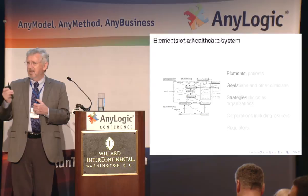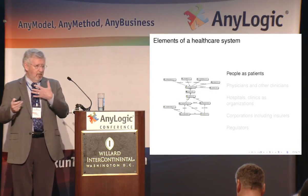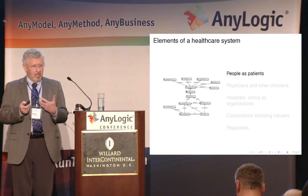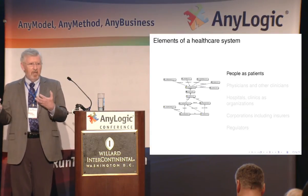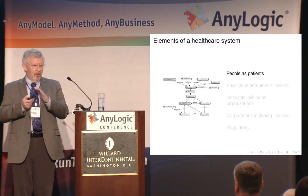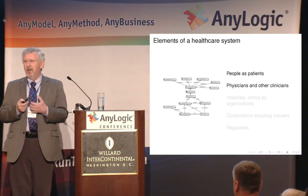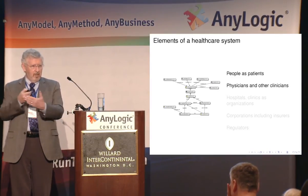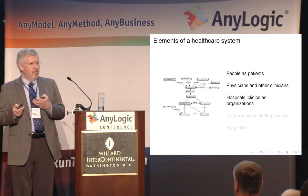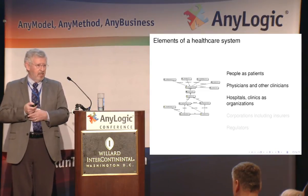The elements of the healthcare system we're looking at include, first of all, people as patients — but we need to distinguish between people and patients, because it's important to know which aggregate statistic we're looking at: if we're looking at health status, it's the whole population; if we're looking at outcomes, it's patients. Secondly, we have physicians as a very dominant provider of care, but other clinicians as well. And then hospitals, clinics, and other organizations, which tend to be aggregates of clinicians but a little different from individual practitioners.